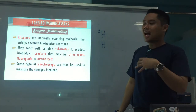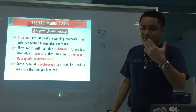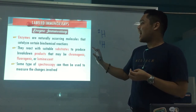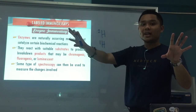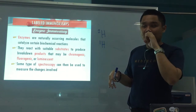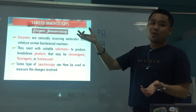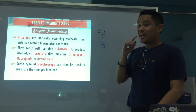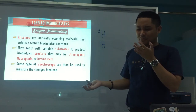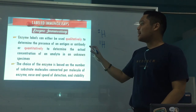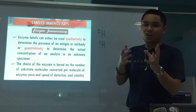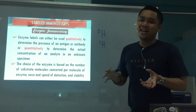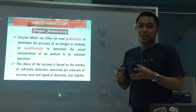Enzymes are naturally occurring and catalyze biochemical reactions. They react with suitable substrates, and their products may be chromogenic — meaning they release color — fluorogenic, releasing fluorescence, or luminescent, releasing light. These can be measured using spectrophotometry. Your enzyme labels can be used either qualitatively — noting color changes — or quantitatively — using absorbance to extrapolate concentration of the specimen.